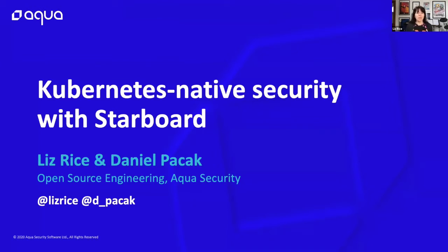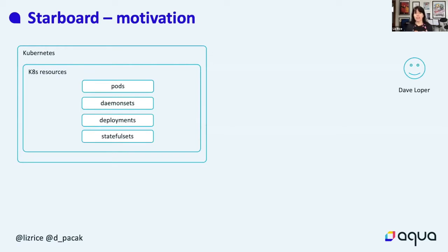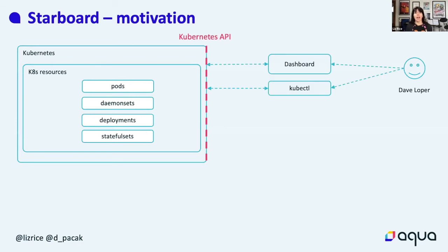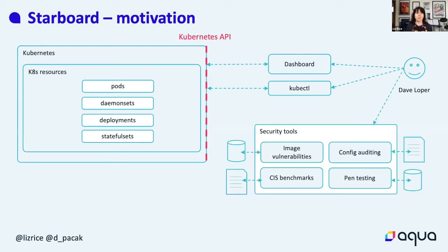First, the motivation behind Starboard. Meet our friend Dave Loper. He uses Kubernetes and tools like Kubectl, perhaps a dashboard like Octant or another IDE interface that uses the Kubernetes API to access the cluster and manipulate resources. Now if Dave is also interested in security, today he has to learn to use a variety of different security tools. They all have different interfaces and generate output in different formats - maybe HTML reports, maybe JSON files.